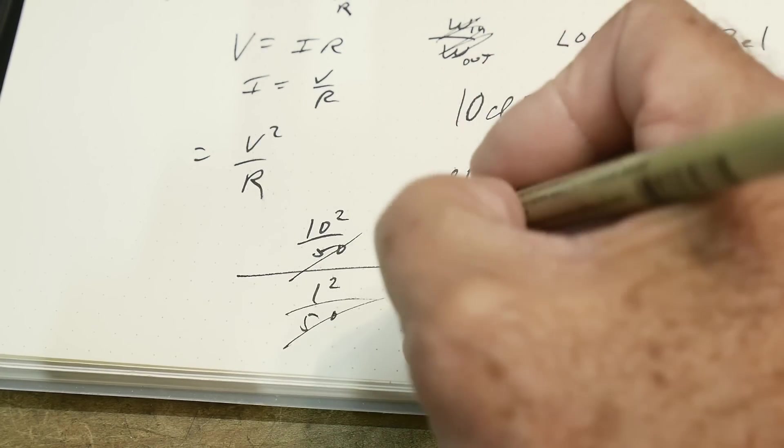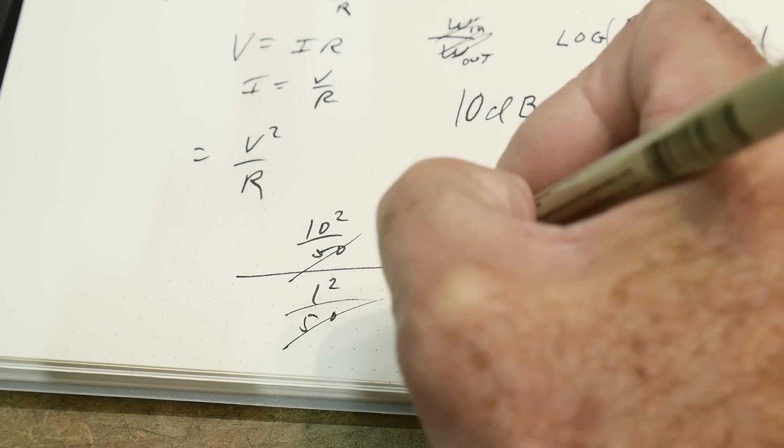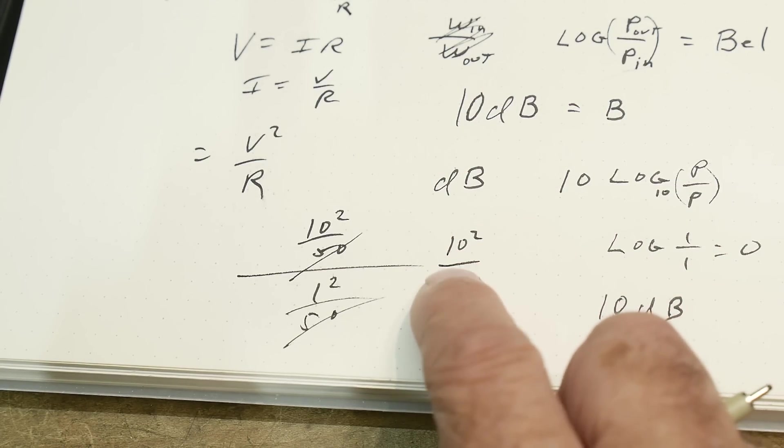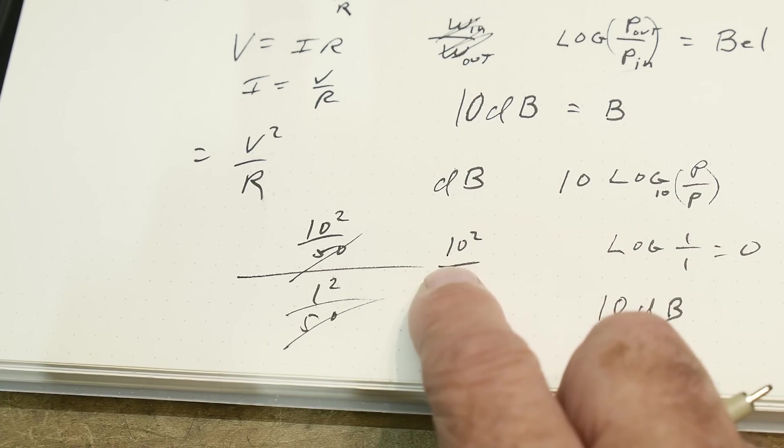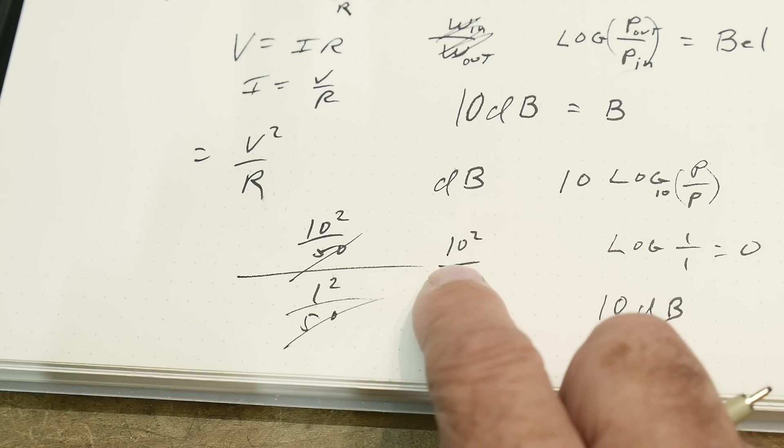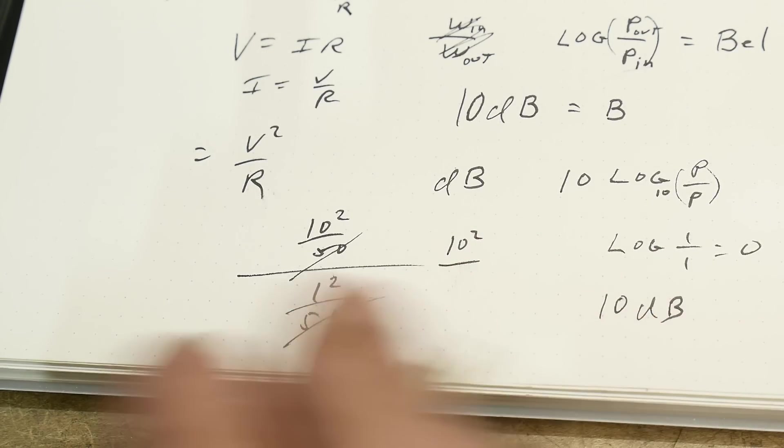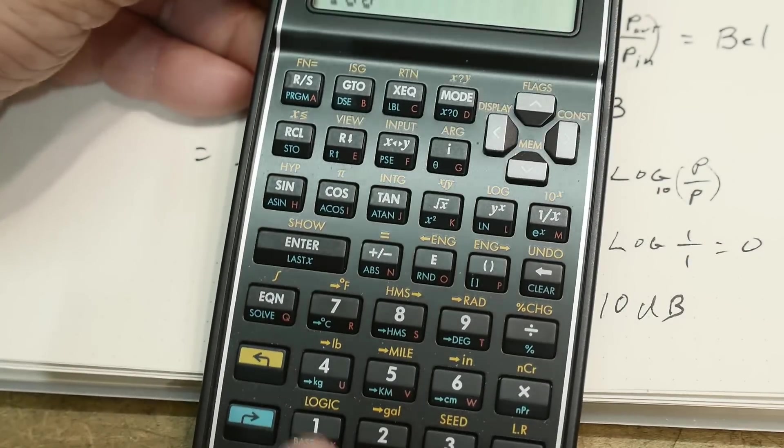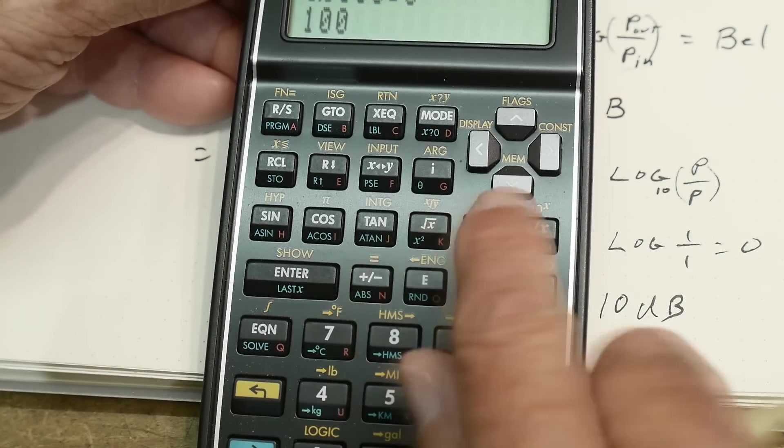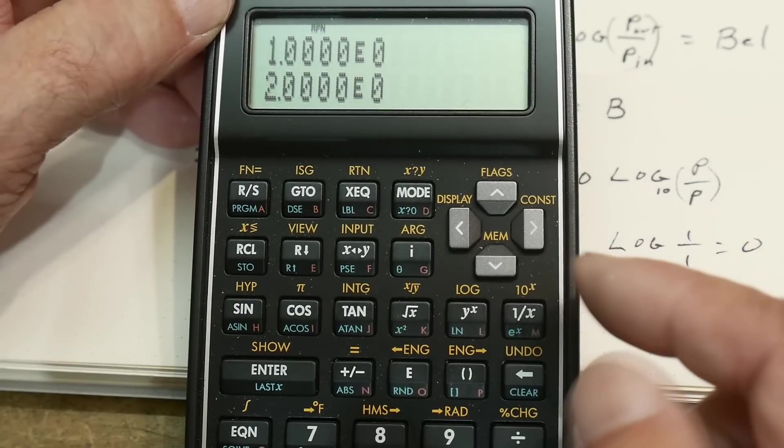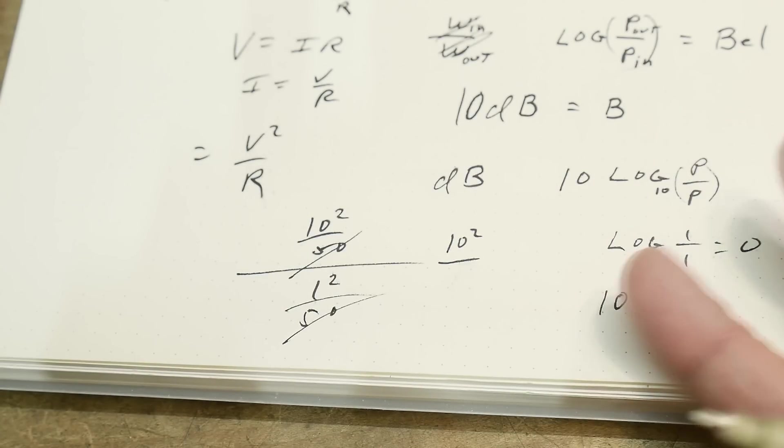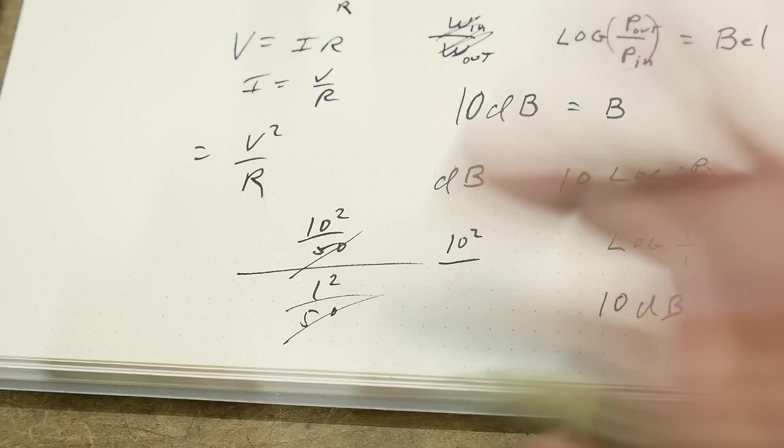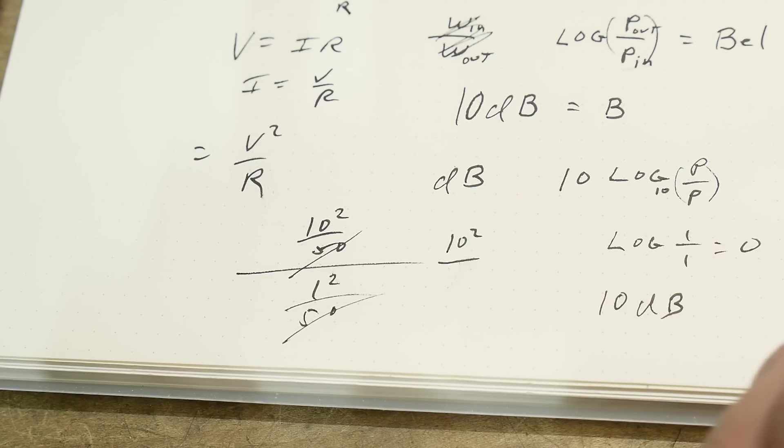Basically you're going to have 10 squared divided by 1 squared, which is just 10 squared, which is 100. Then you take the logarithm of that, so we have 100, and the logarithm of that is 2. Then 2 times 10, remember we have that 10 out there, you have 20 dB.